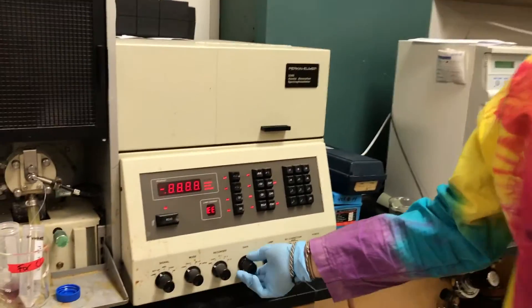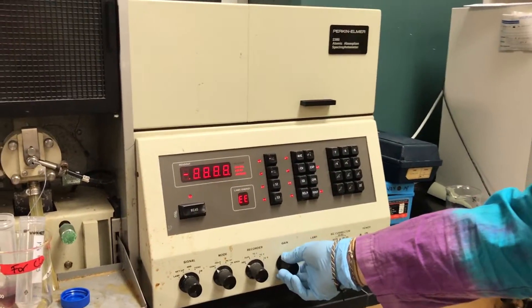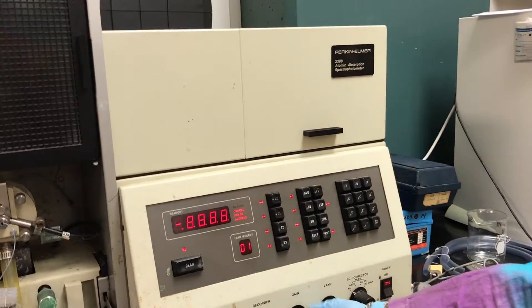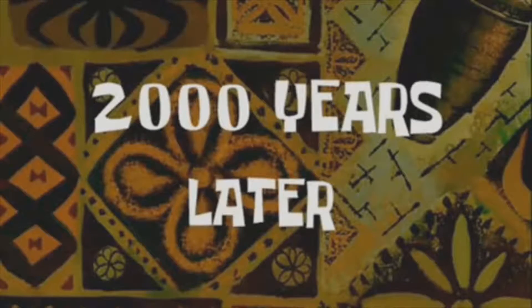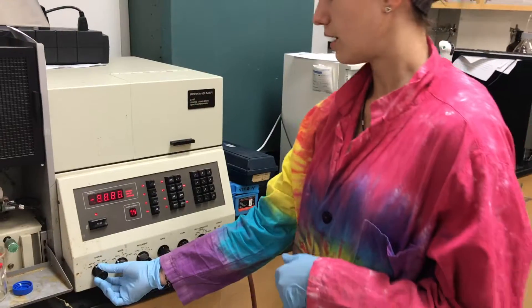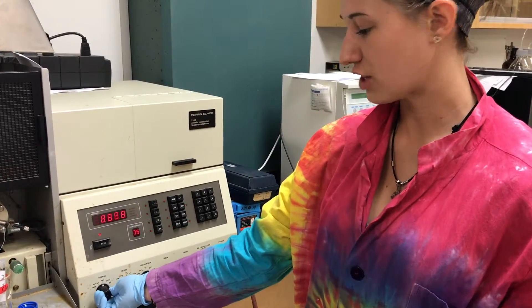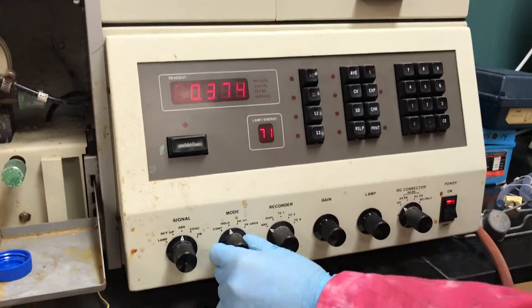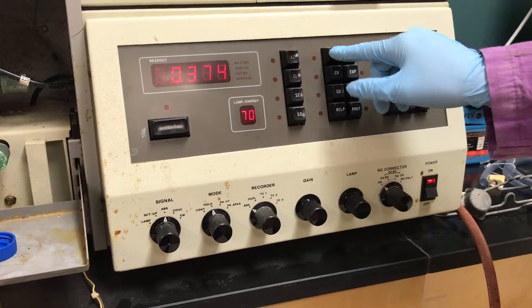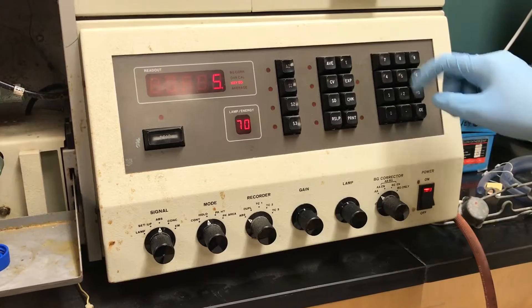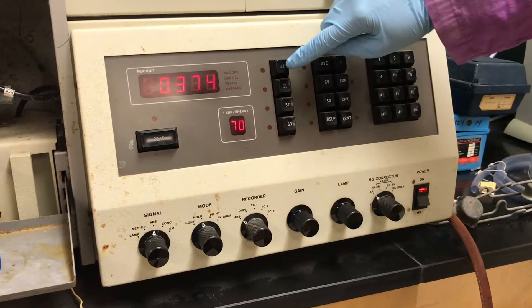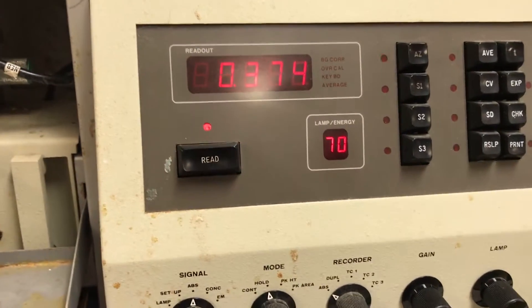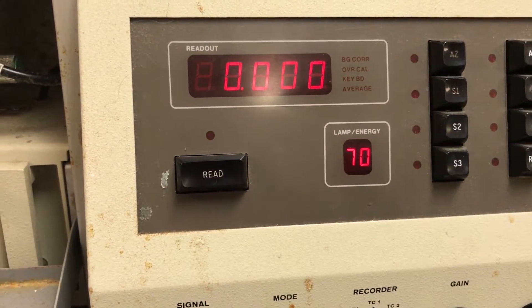Then, you adjust the gain to 75. Two thousand years later. Now, we're going to zero the instrument. Change signal to absorbance. Change the mode to hold. And click average, five, T, AZ. This will take the average over a five second time frame to zero out the instrument. Like that.